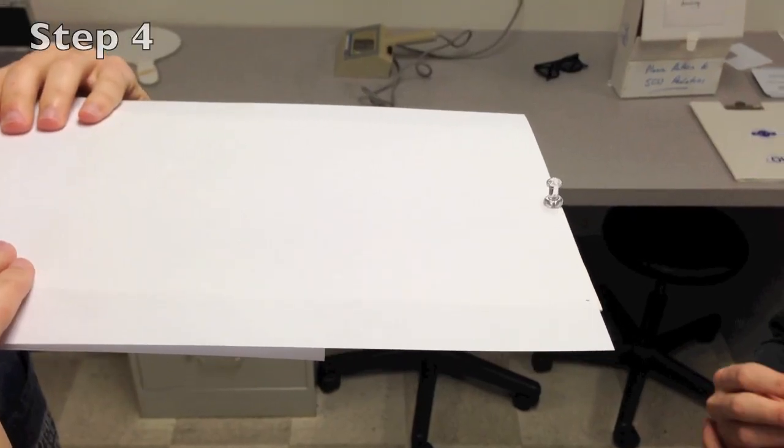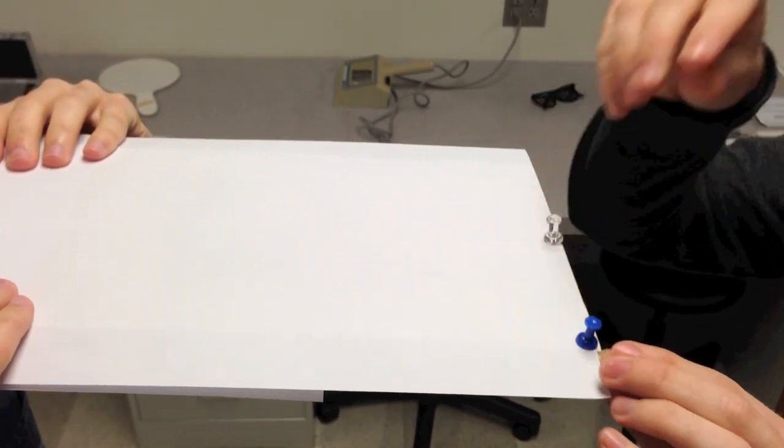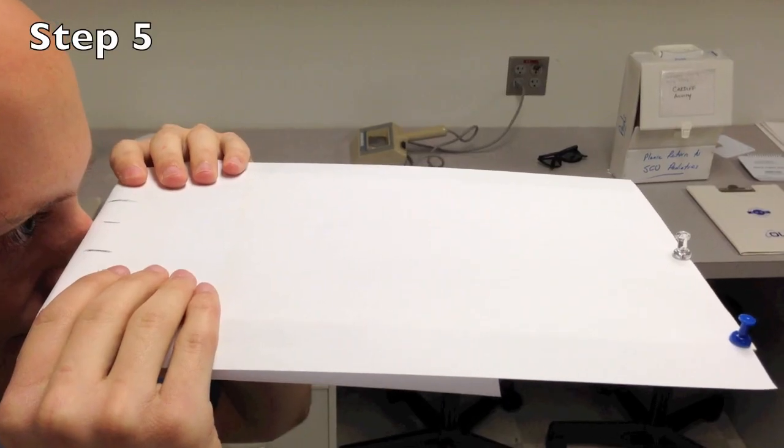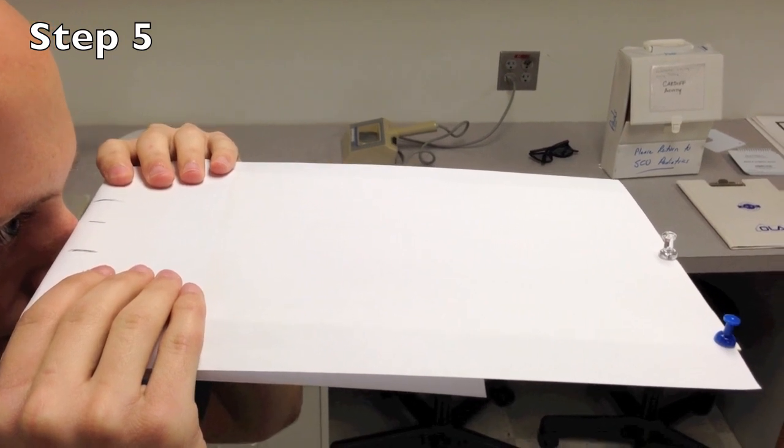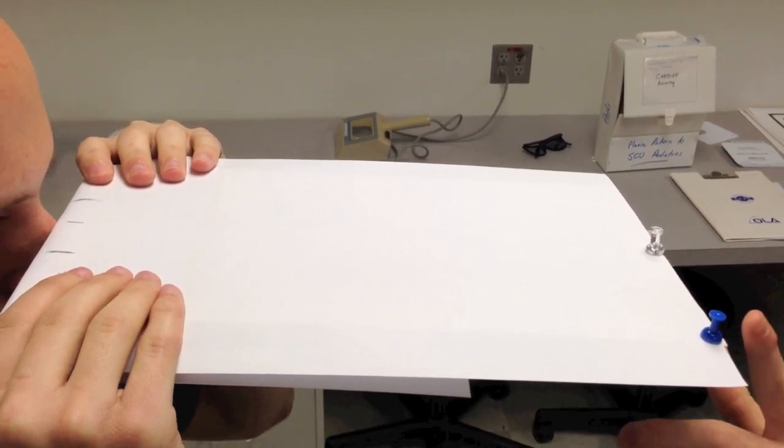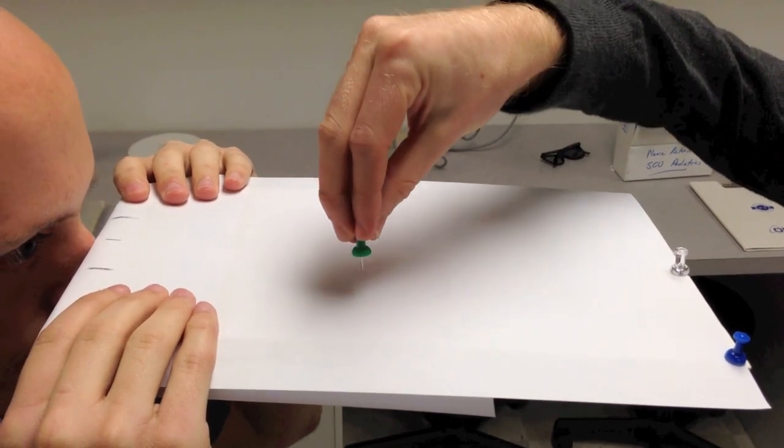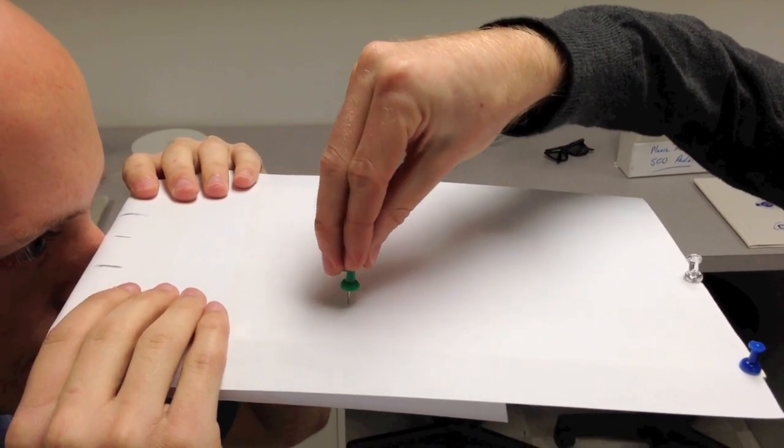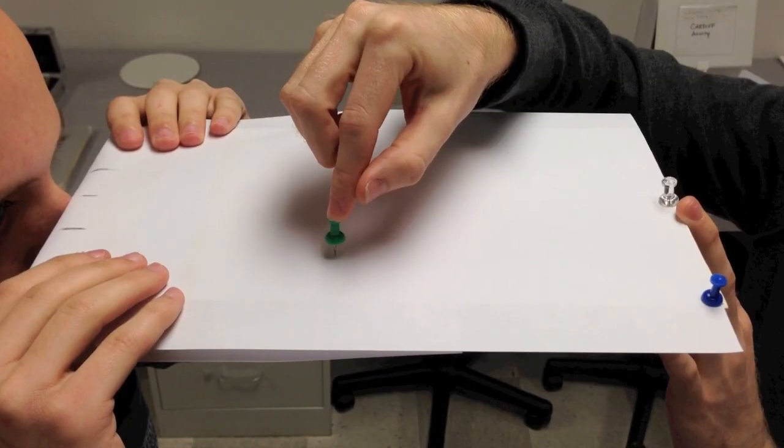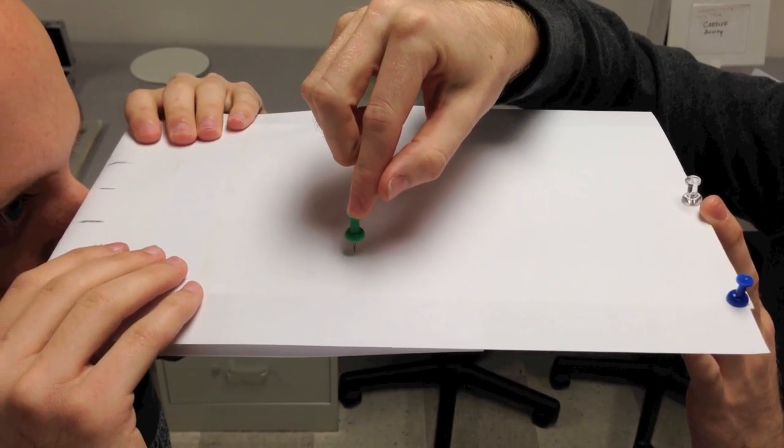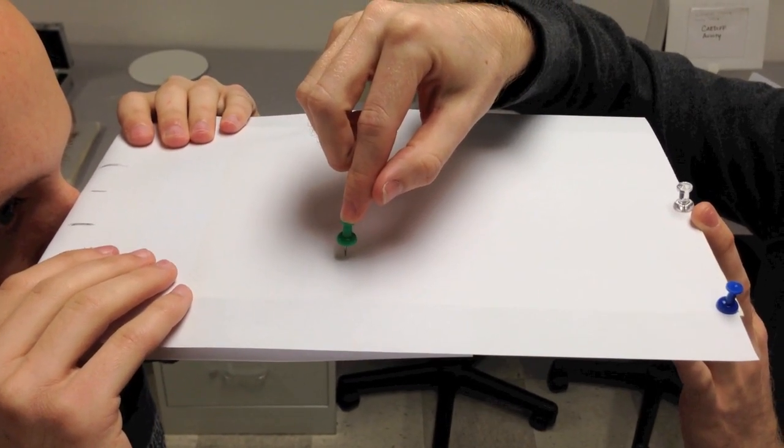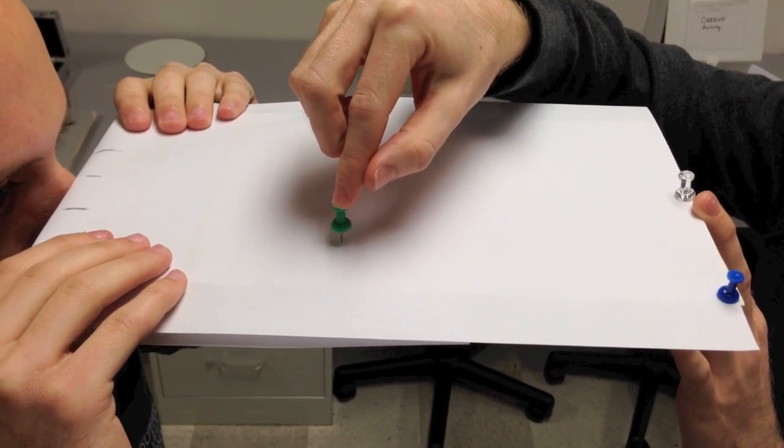Next, place a second pin to the far right corner of the foam board. Have the patient fixate on the right pin and then bring a third pin nearer to the patient between the patient and the fixation pin. With the near pin in place, the patient should see the near pin as double while fixating the distance pin.